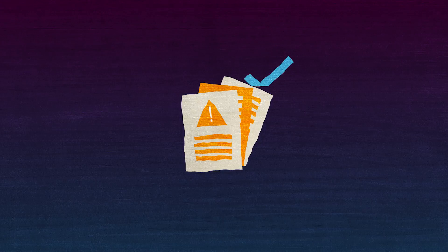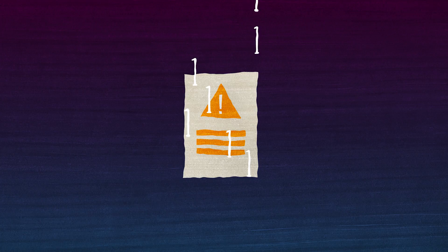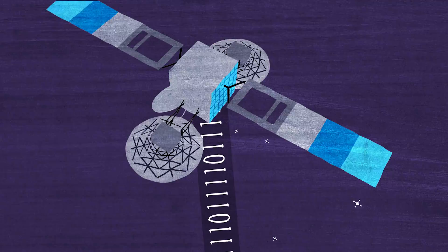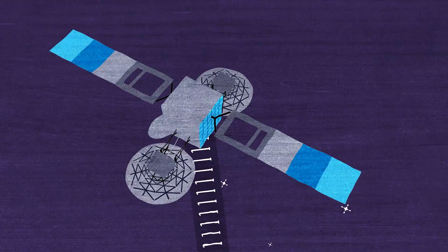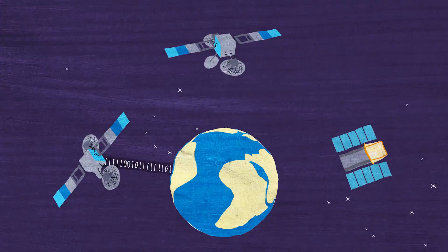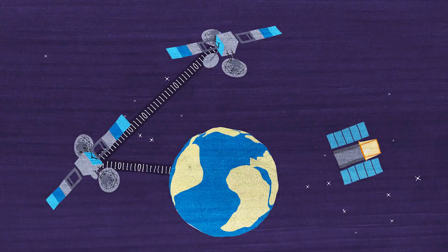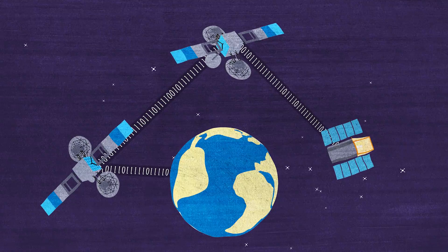If we decide to approve this request, what will happen is we will send that information up to the satellite via the TDRS network. And this is a network of satellites orbiting all around which allow us to talk to Swift at any time.